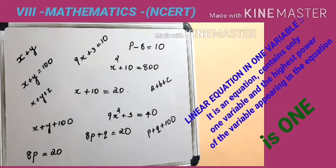Here we will identify three words: equations, one variable, and linear. First, equations. What do you mean by equation? An equation is a mathematical statement consisting of an equal symbol between two algebraic expressions.